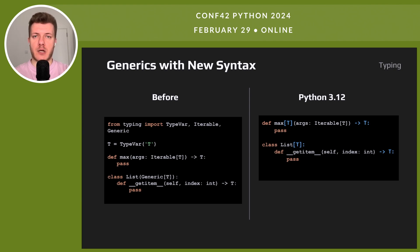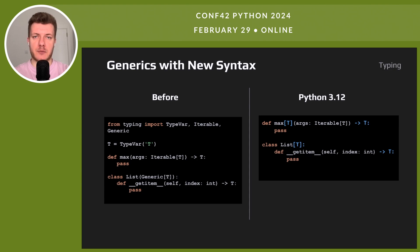Before, we used TypeVar for type parameters, and classes needed Generic[T] to use generics — you write the type in square brackets. Look at the max function and list class examples. The new way is clear and simpler: no more extra steps or wrapping needed. This makes our code cleaner and easier to understand.